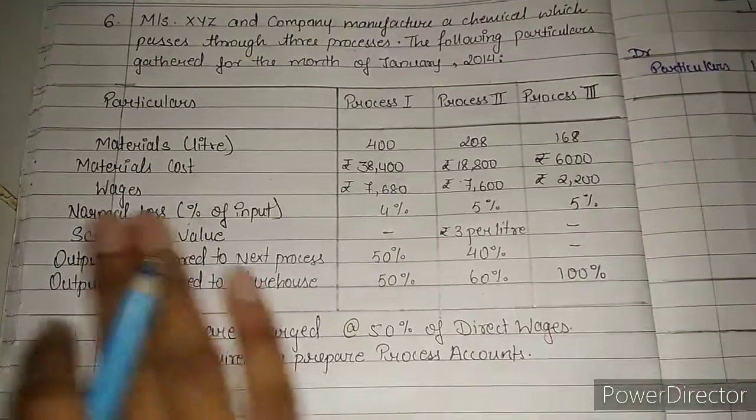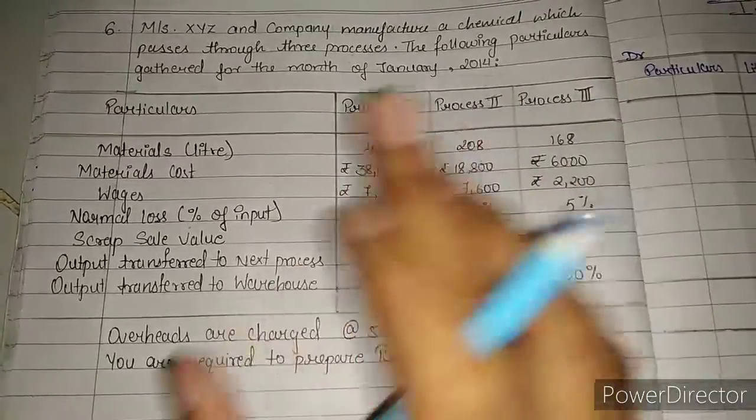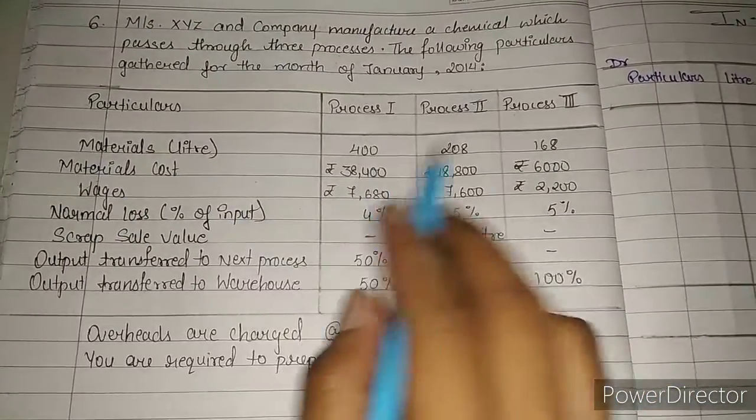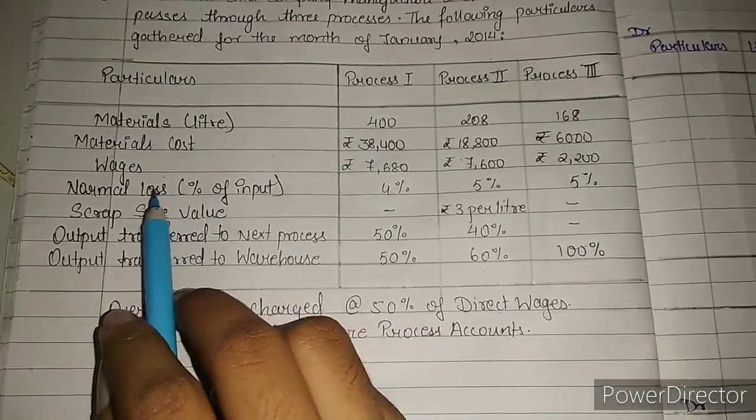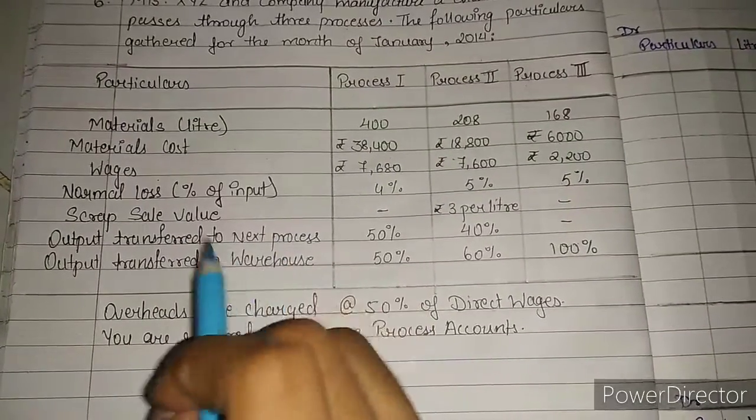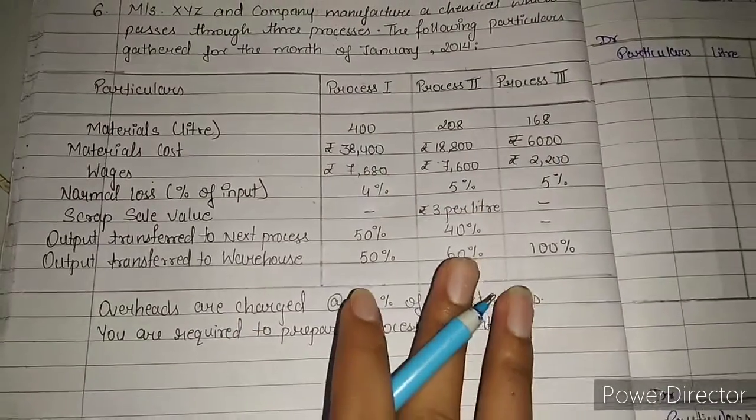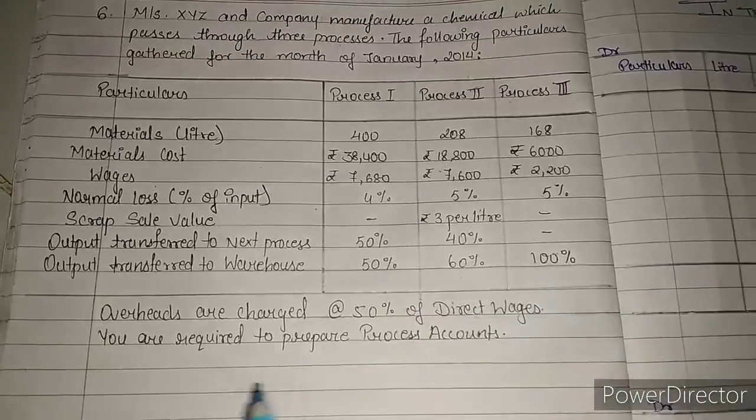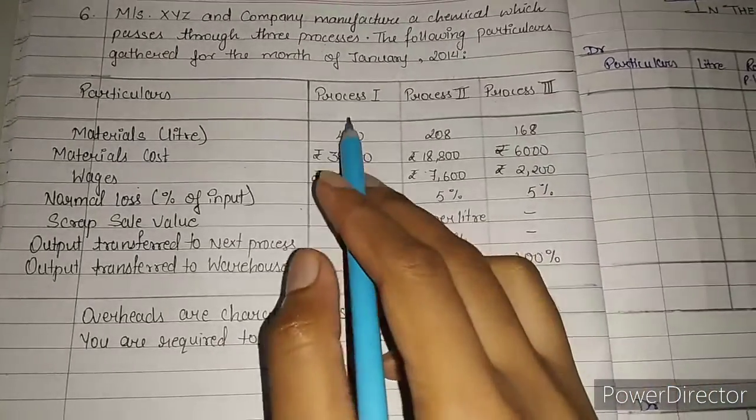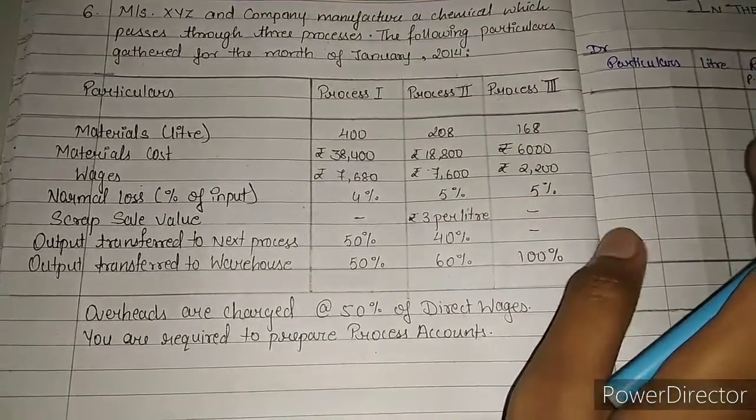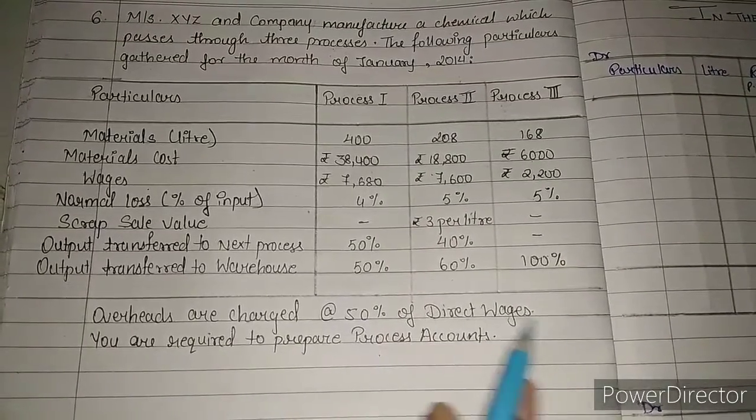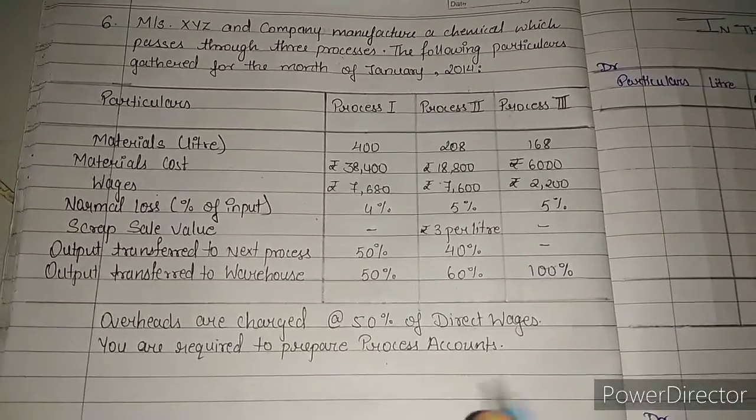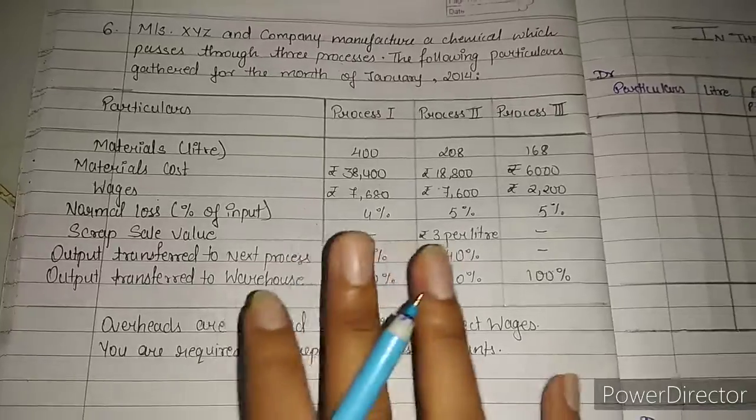The question states: XYZ and Company manufactures a chemical which passes through three processes. The following particulars are gathered for the month of January 2014. We have three processes here. Material is given per liter, so we'll write per liter instead of unit in our format. Material cost, wages, normal loss, scrap value, output transfer to next process and output transfer to warehouse are provided. Overheads are charged at the rate of 50% of direct wages. You are required to prepare process accounts and quantity statements for processes one, two, and three.